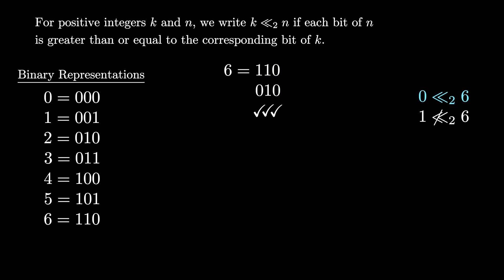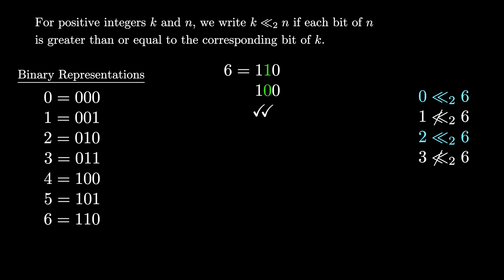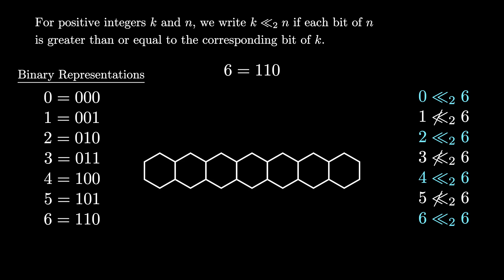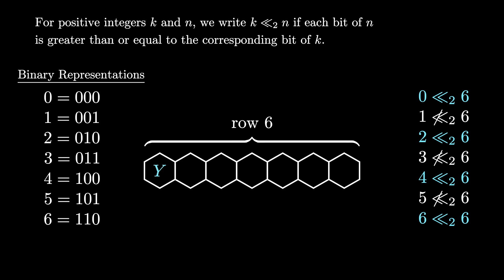We can go through each integer between 0 and 6 and check for bitwise dominance. We see that 2 is bitwise dominated by 6, but 3 is not. 4 is bitwise dominated by 6, but 5 is not because of the last bit. And finally, the definition implies that each number bitwise dominates itself. Using this partial order, we consider a row of 7 hexagons called row 6, where each hexagon represents one of the integers from 0 to 6. We put a Y for yes if that hexagon number is dominated by the row number, otherwise an N for no.